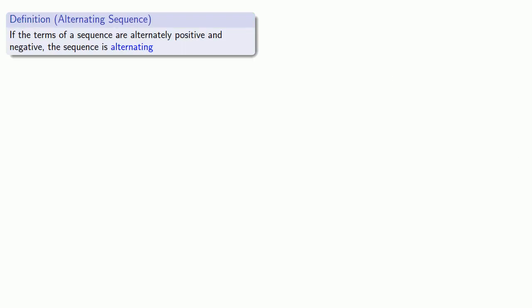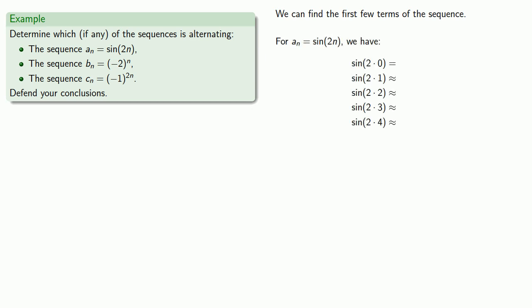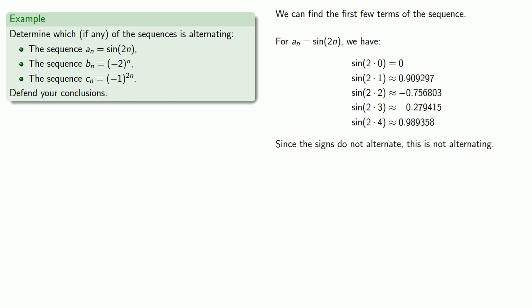There's one more important type of sequence. If the terms of a sequence are alternately positive and negative, the sequence is alternating. For example, let's consider three sequences: sin(2n), (-2)^n, and (-1)^(2n), and let's see which, if any, of these are alternating. For a_n = sin(2n), we evaluate for n = 0, 1, 2, 3, and 4. We see that these signs are sometimes positive, sometimes negative, but they do not alternate. And since the signs do not alternate, this is not an alternating sequence.